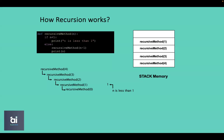After executing, the recursive method with parameter 1 is popped from stack memory. The system goes to the next method in the stack, which is the recursive method with parameter 2. This prints 2 because n is 2 at that point. After this, the recursive method with parameter 2 is popped out from the stack memory.